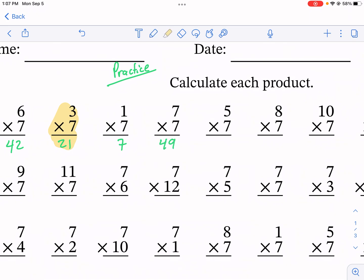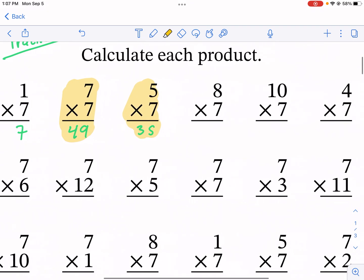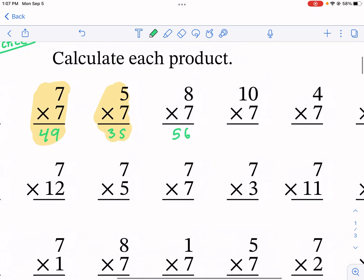49, this is another one you need to memorize, because this is a perfect square. 7 times 7, 49. And then 35. If it's ending in 5, your 5 times tables are a little bit easier. So definitely have this 35. This is a tricky one, 56. A lot of students struggle with the 8s and the 7s and the 6s.